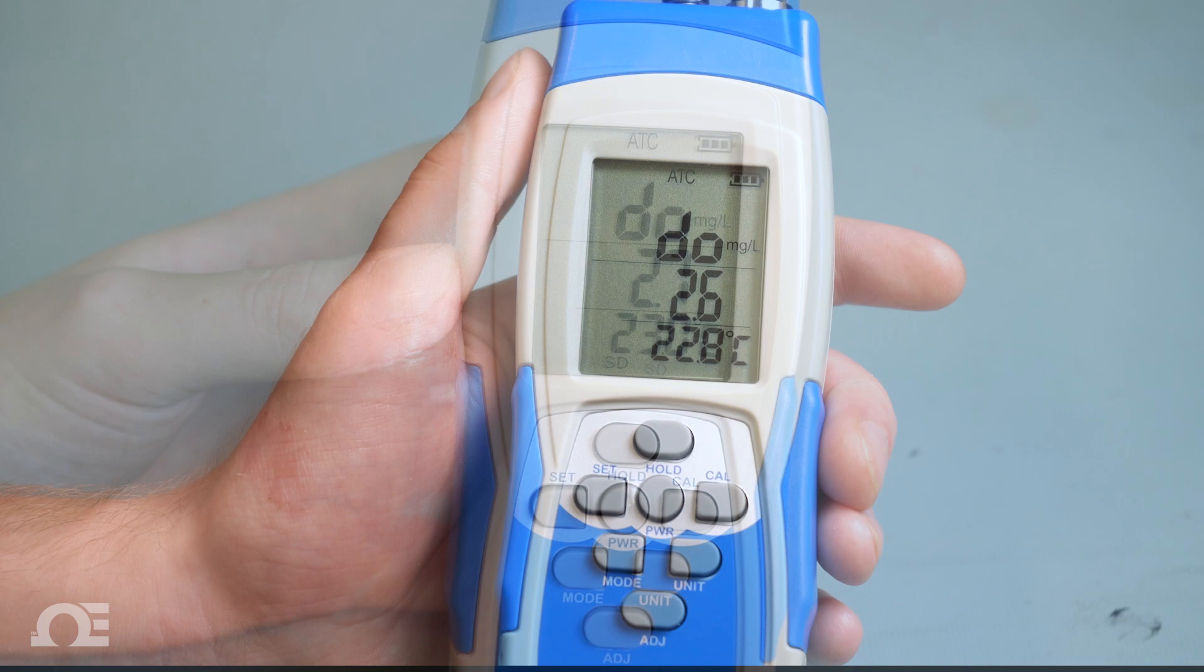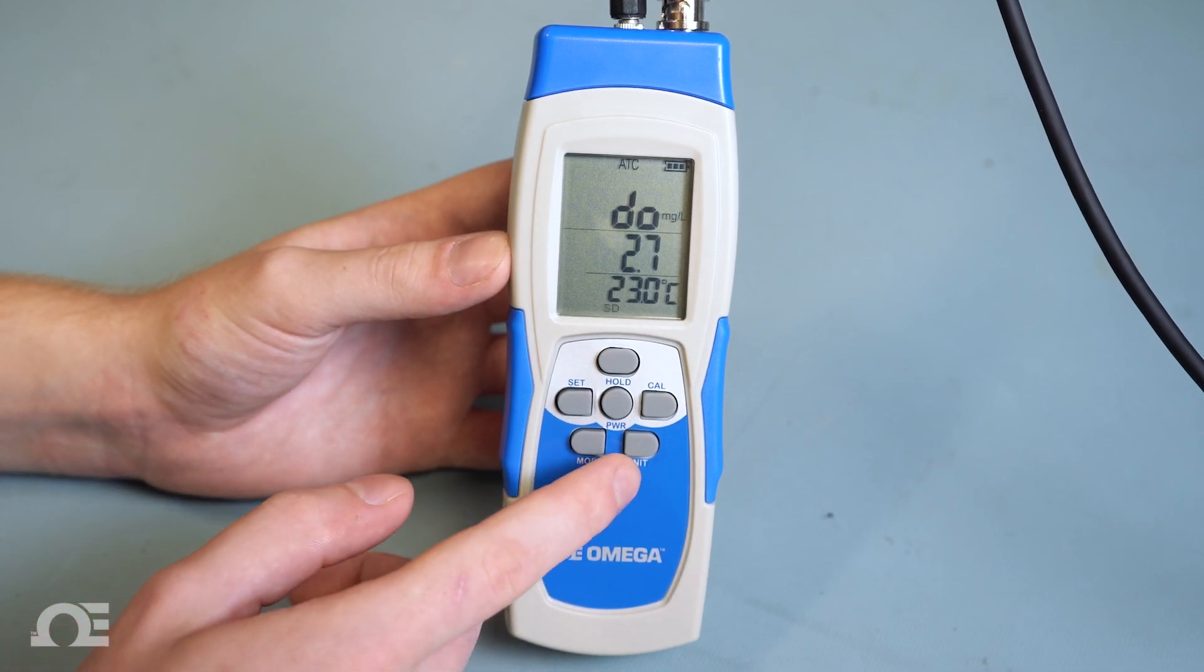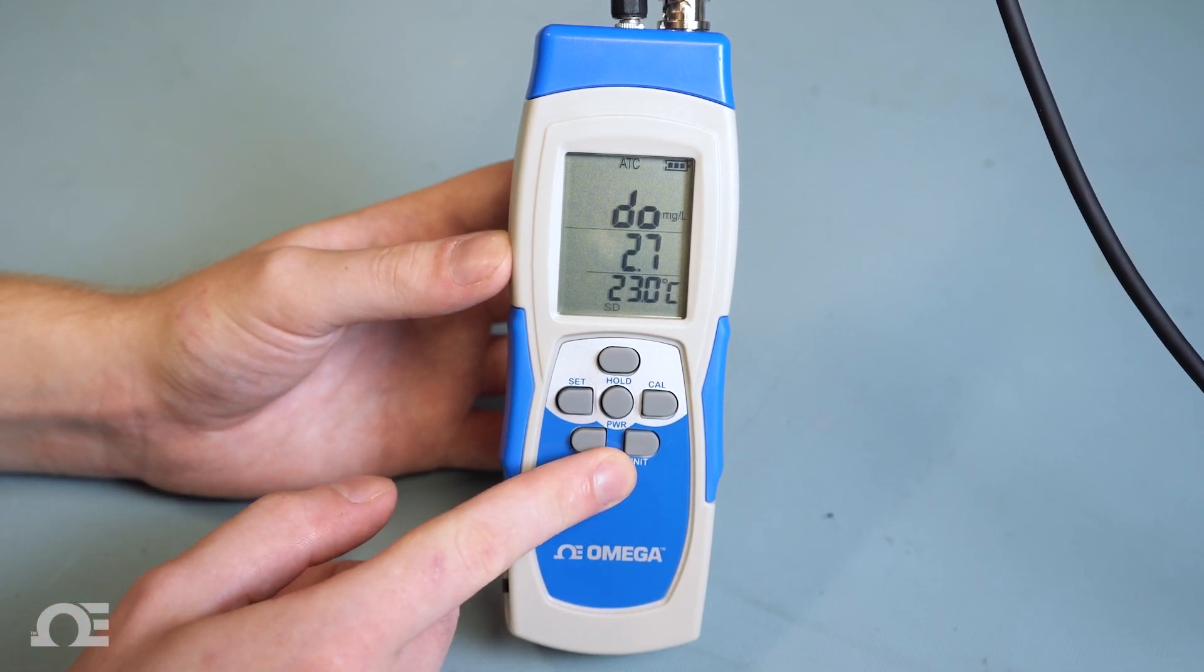If SD triple flashes, the card has been formatted incorrectly and no data is being recorded. To stop data logging, press and hold the adjust key until SD stops flashing.